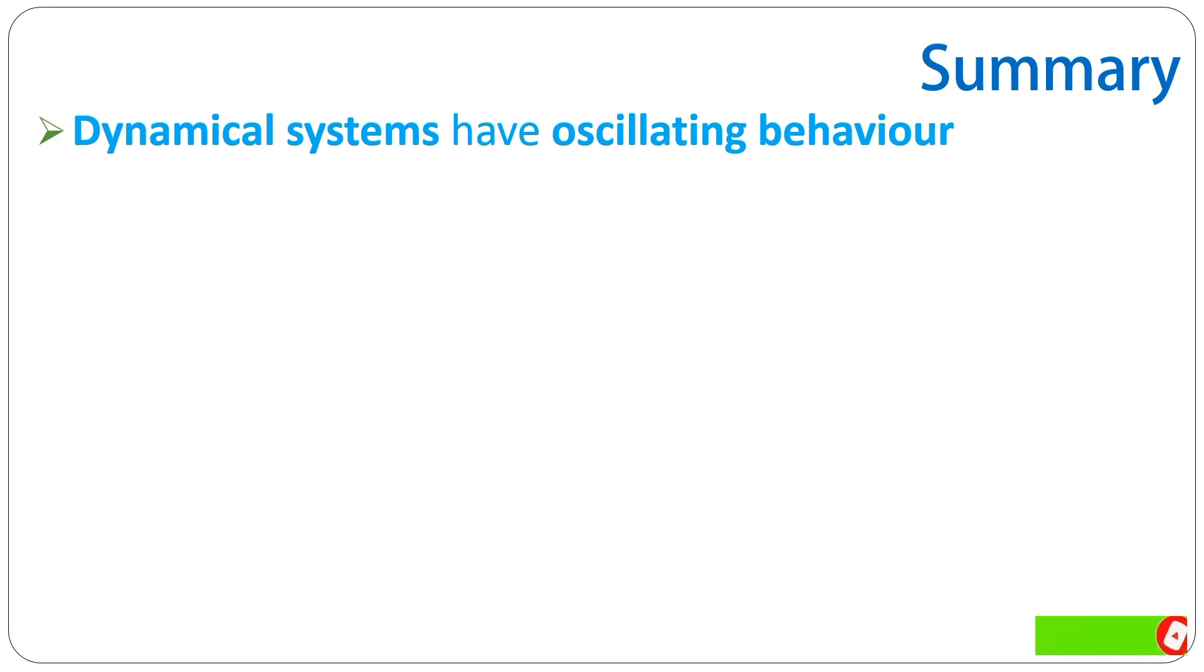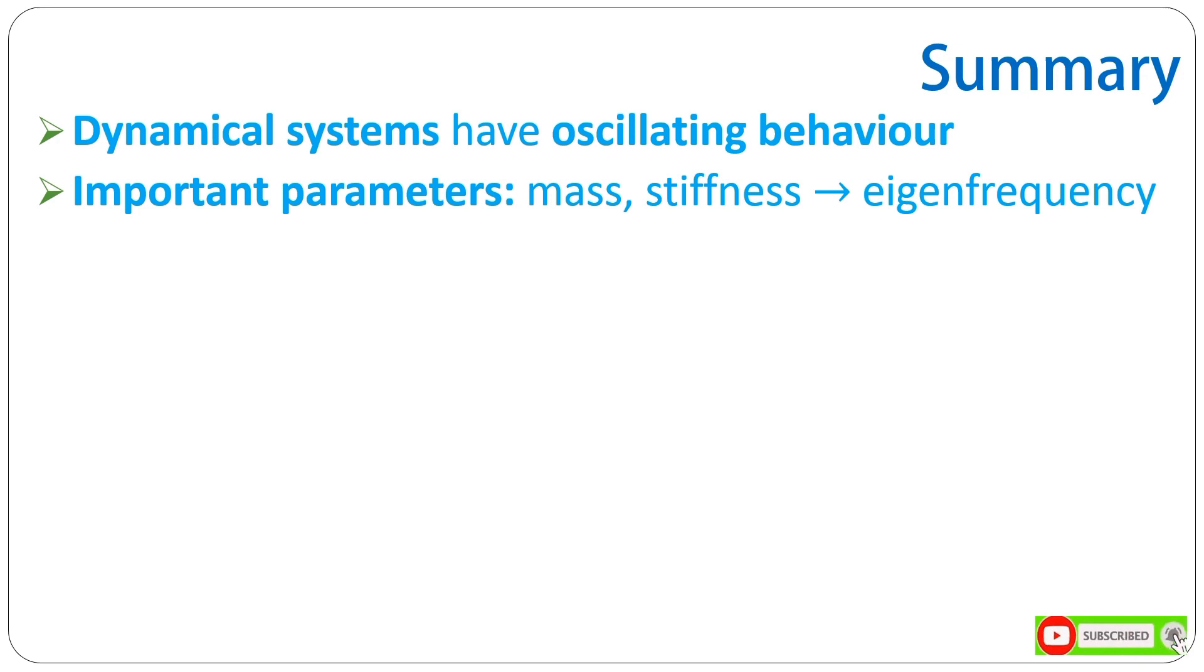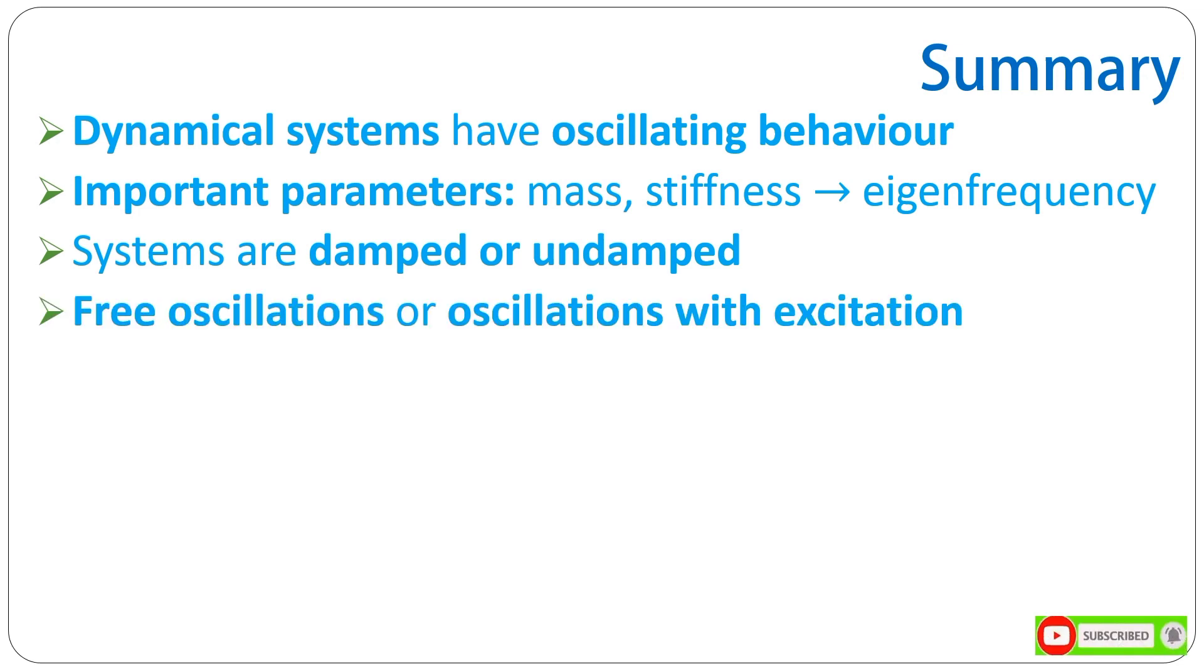The summary of the video is as follows. The first thing is that we've realized that dynamical systems are oscillating, and the main parameters that describe an oscillating system are mass and stiffness, and for mass and stiffness you have also learned how to determine the so-called eigenfrequency. Additionally, systems may be damped or undamped, which means that in case of an undamped system, we just have to refer to mass and stiffness, but if a system is damped, we also need to refer to the damping coefficient.